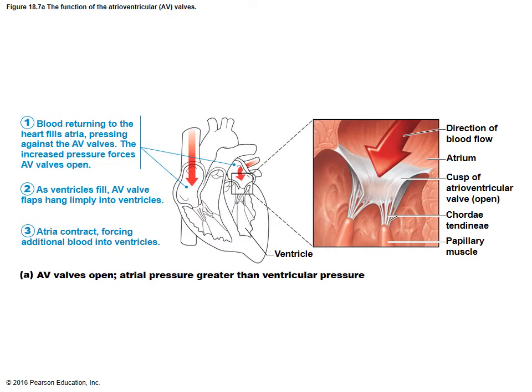Here is an illustration showing how the valves operate based on pressure changes. The way we operate the valves is entirely dependent on pressure. Blood flows from a high pressure point to a low pressure point. For the atrioventricular valves, we want blood to flow from the atrium over to the ventricle.